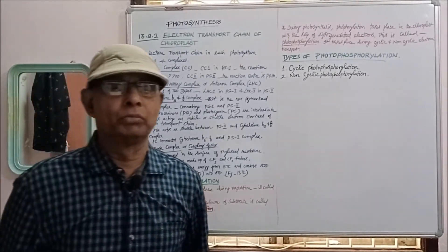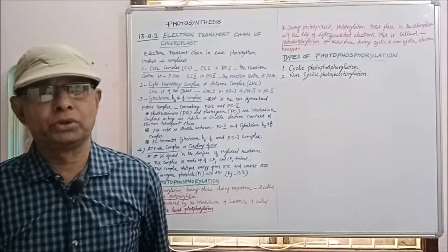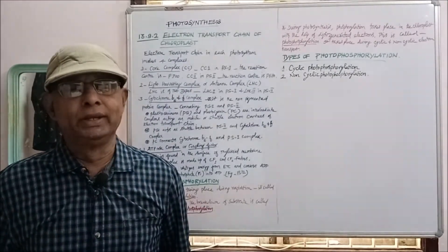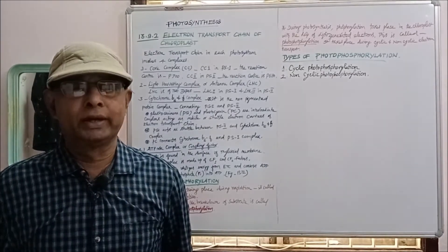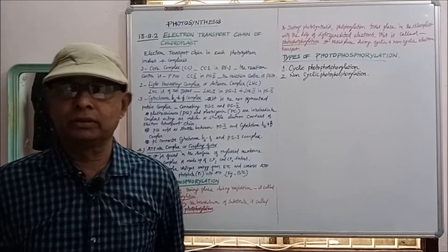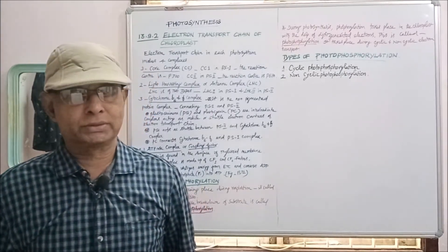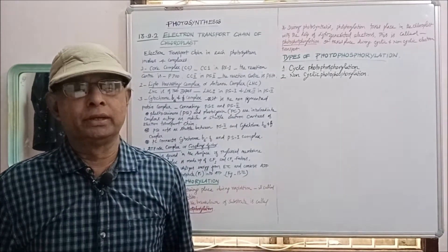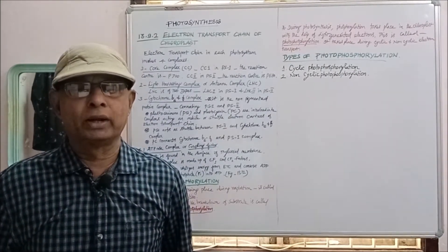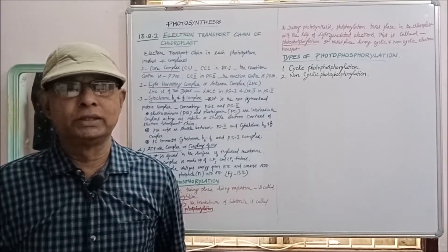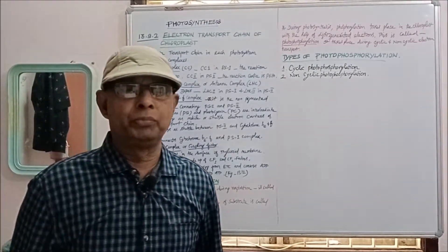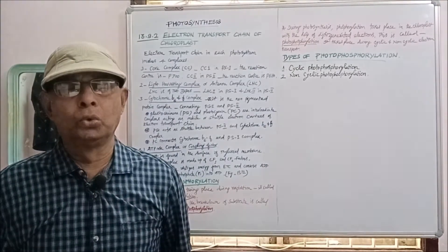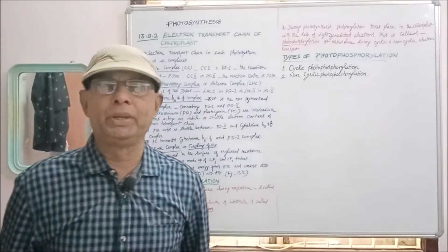The second complex is the light harvesting complex or antenna complex, referred to as LHC. It is also of two types: LHC1, which is present in PS1, and LHC2, which is present in PS2.